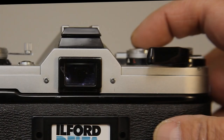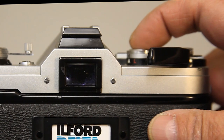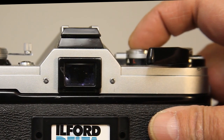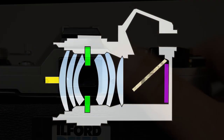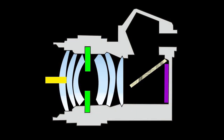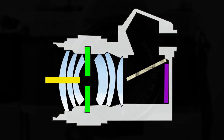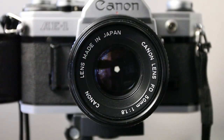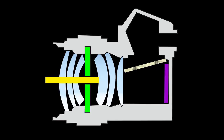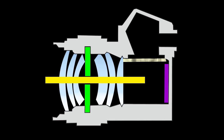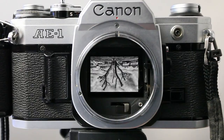We press the shutter. It has a two-step mode: first, it closes the aperture, then opens the shutter to expose the shot.